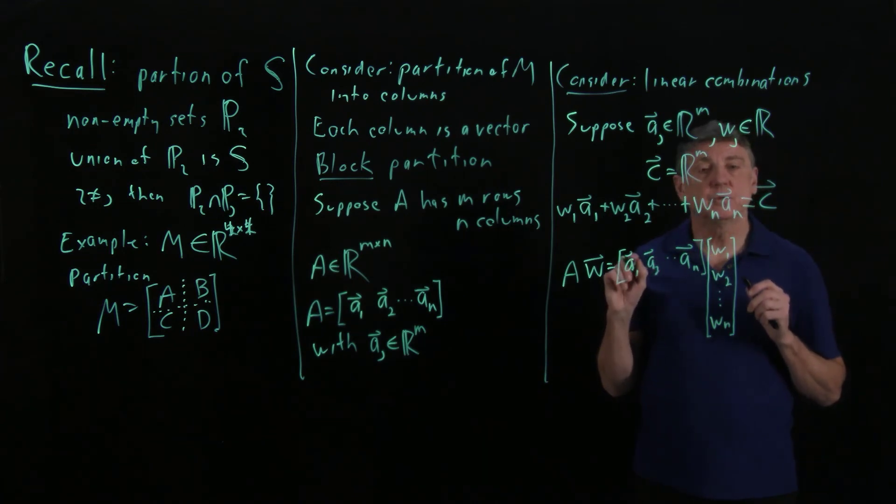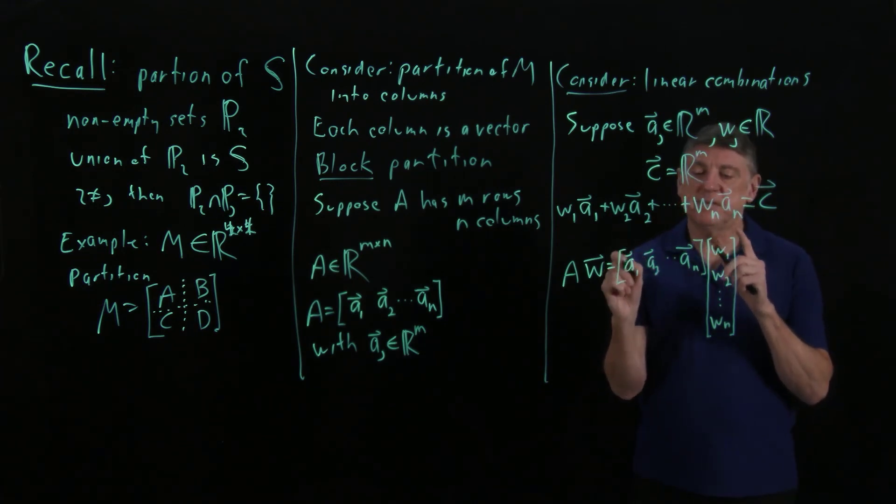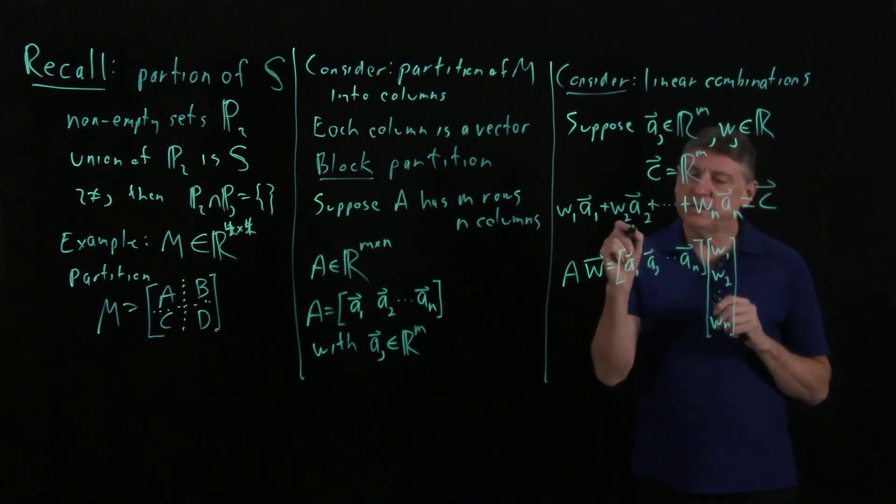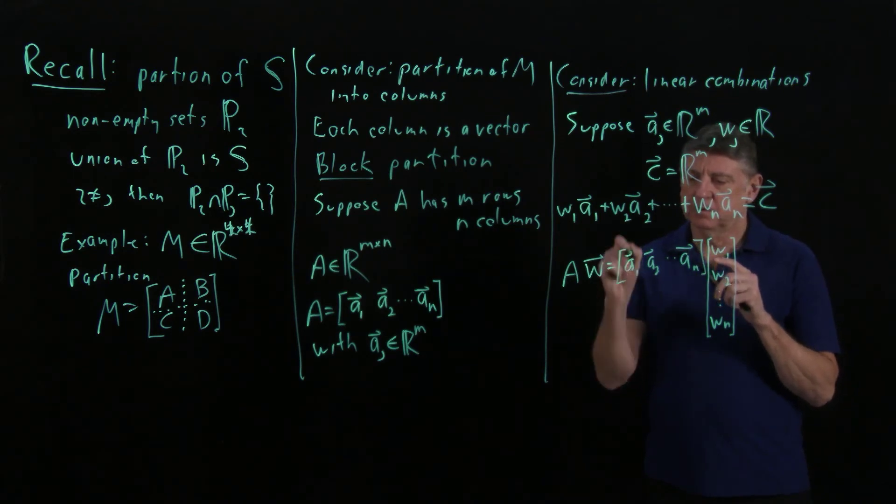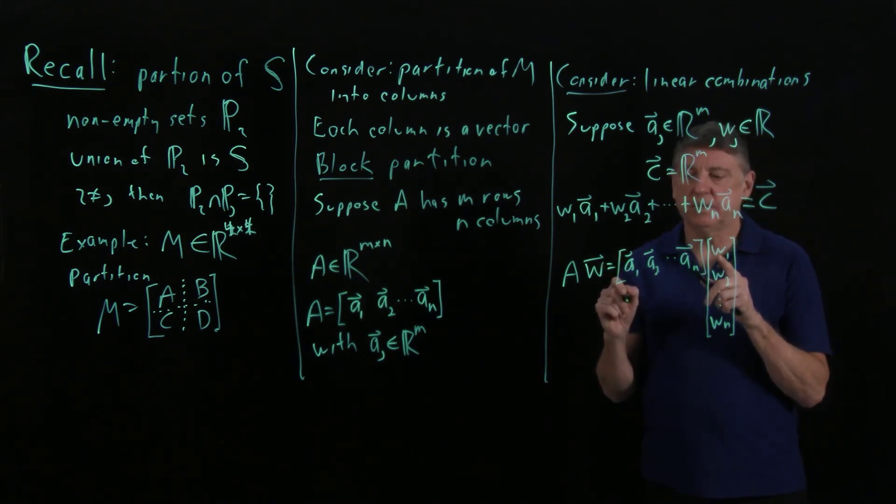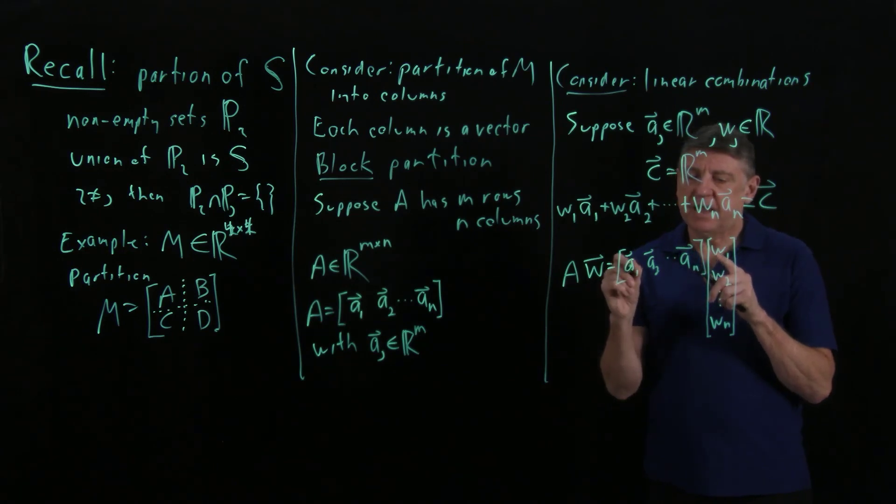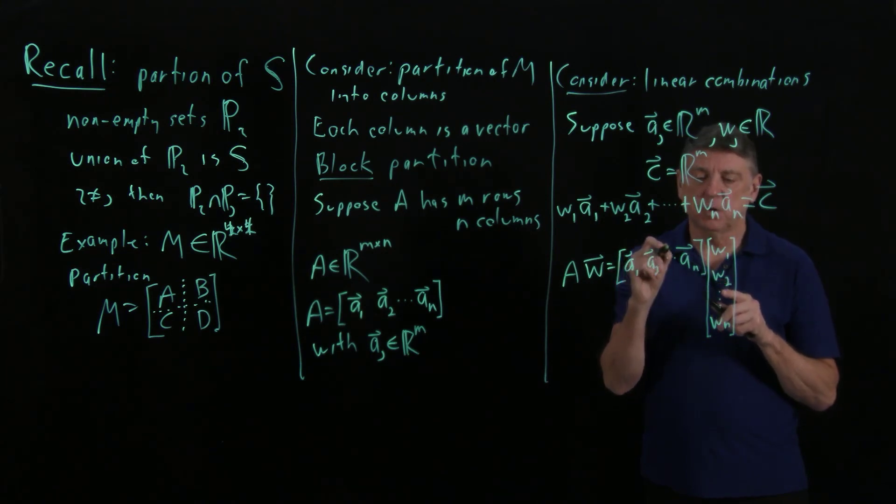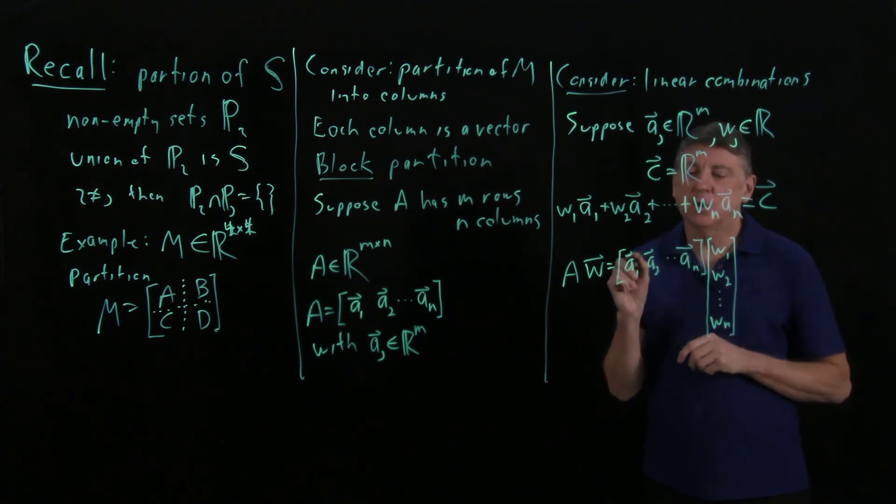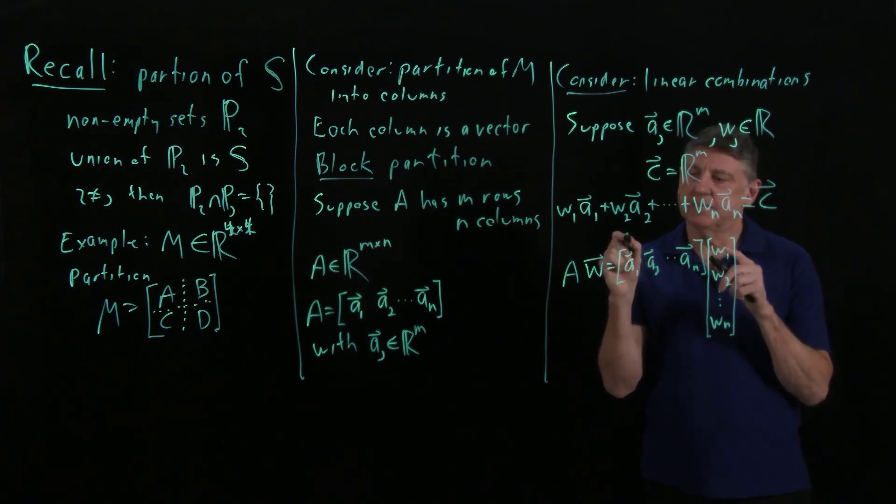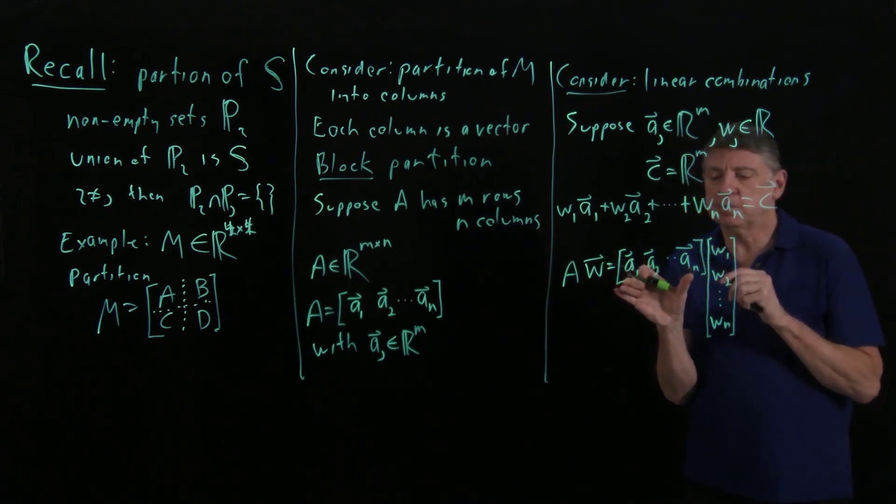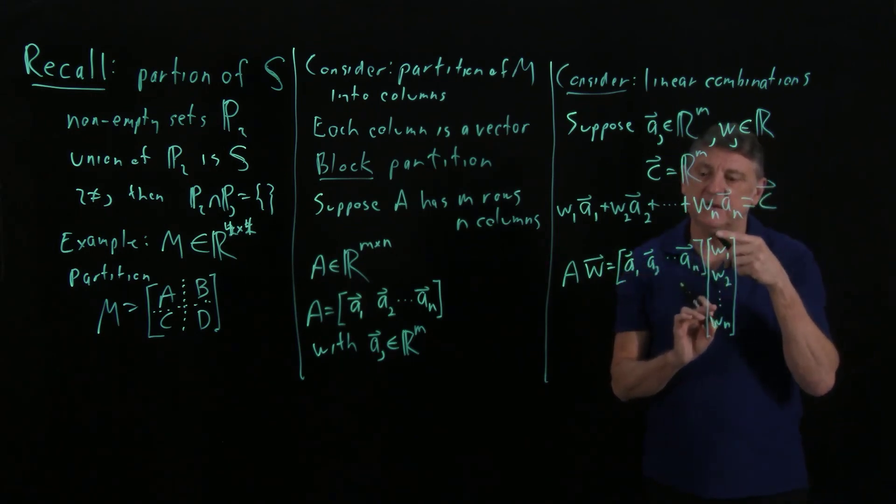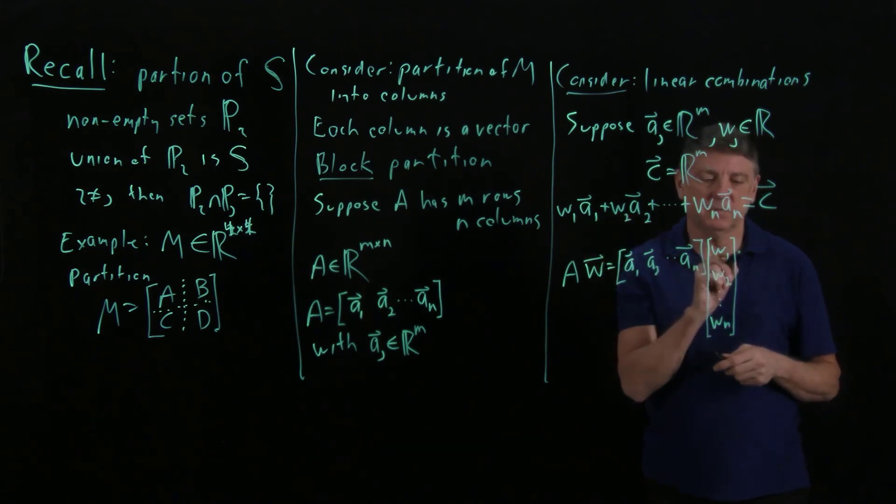Now, what happens when we have this matrix vector product? Well, what we can do is we can say, let's take this entire column of A and multiply it by w1. And then let's add w2 times this entire column, and so on. And what we get when we do that is that the matrix times the vector is the same thing as the block partition matrix times the expanded vector is the same thing as the linear combination.